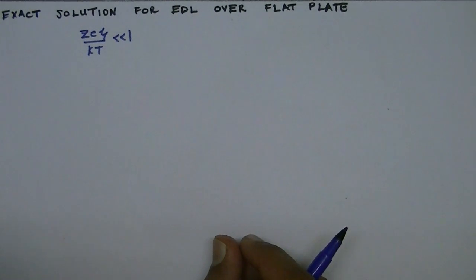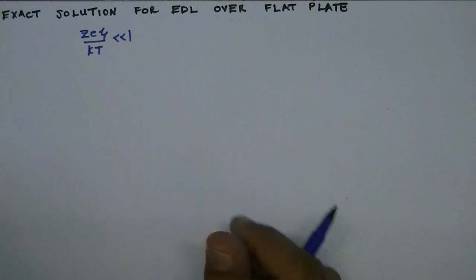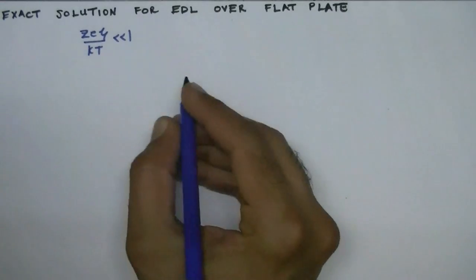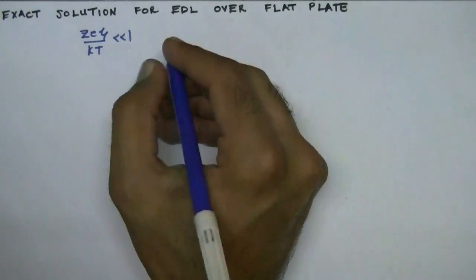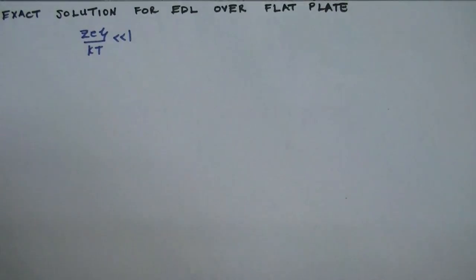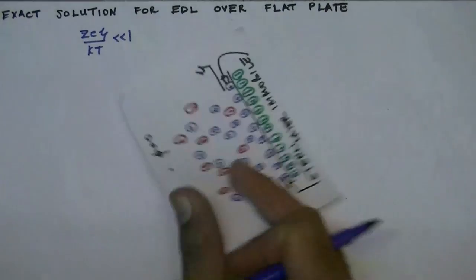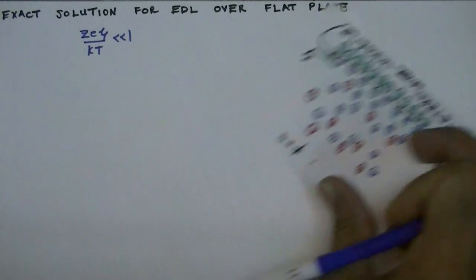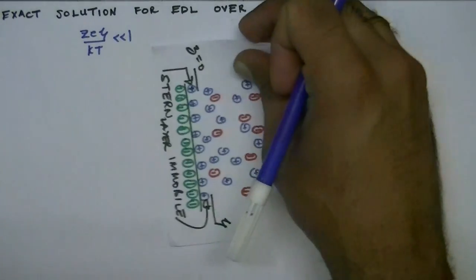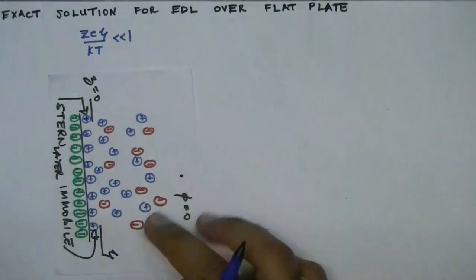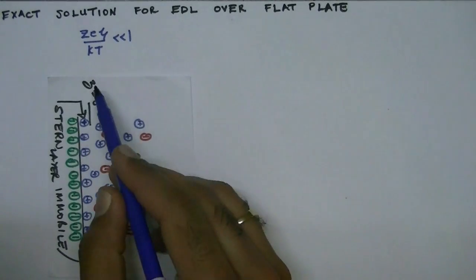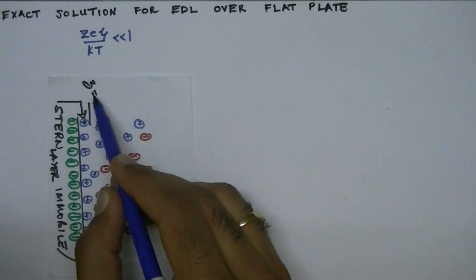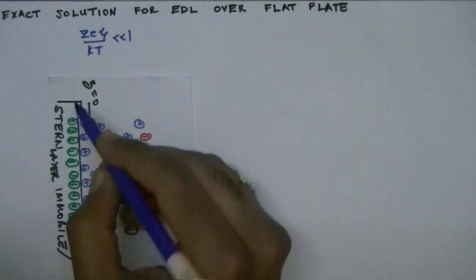Now we relax this assumption and derive the exact solution for the diffuse layer. We are going to solve the equation for the case where we have a flat plate with negative charge at z equals 0.